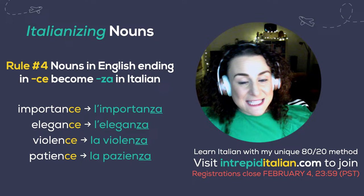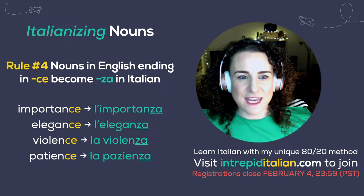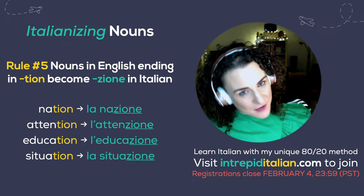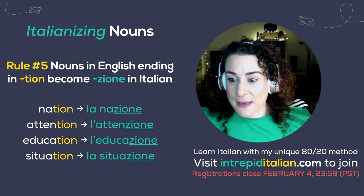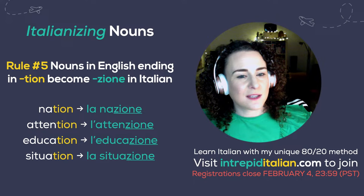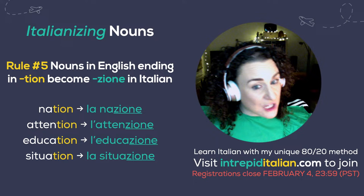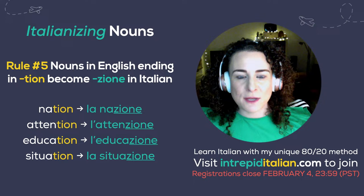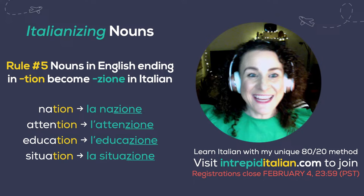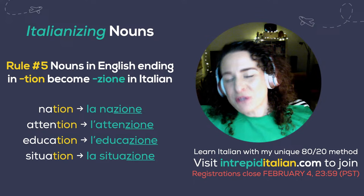Rule number five: many nouns in English ending in TION become ZIONE in Italian. For example: nation becomes 'la nazione,' attention becomes 'l'attenzione,' education becomes 'l'educazione,' situation becomes 'la situazione.' So you can see again there are so many rules like this — we're up to five and I've still got more, and there are even more that I share in the courses themselves.